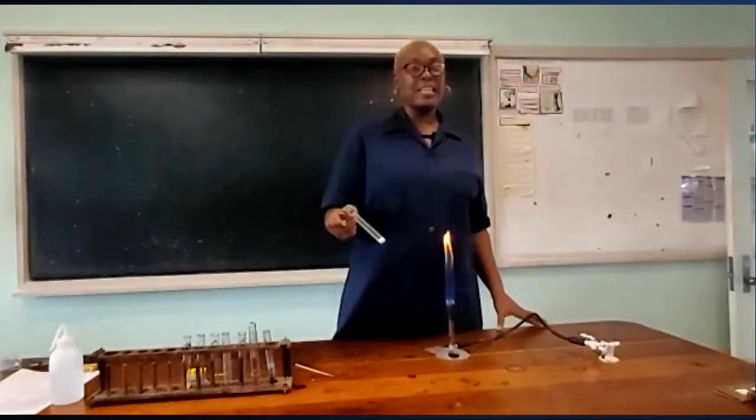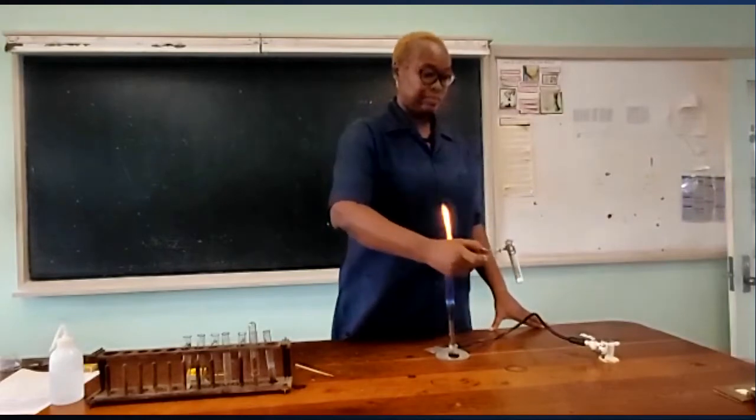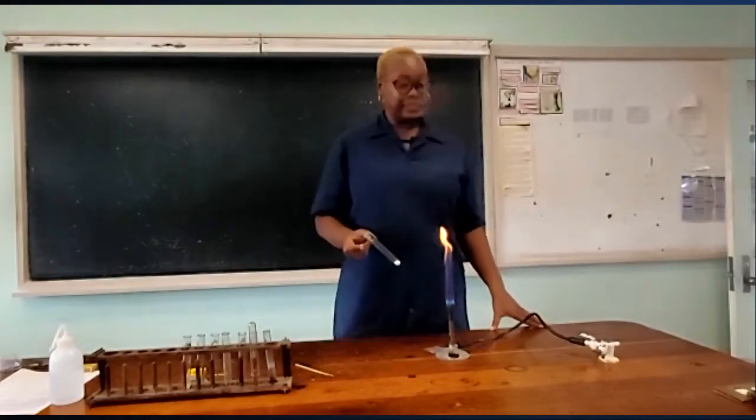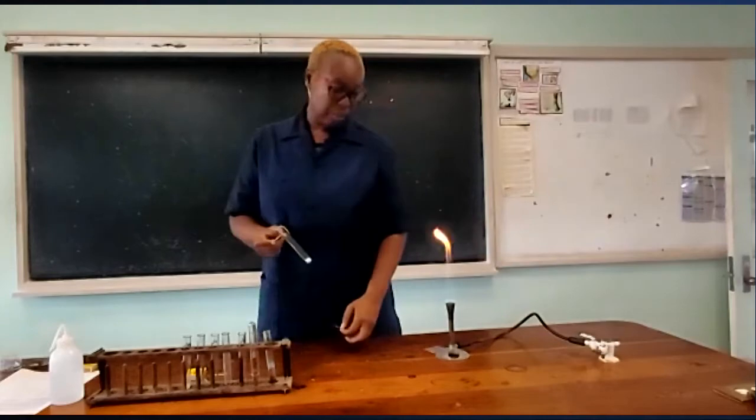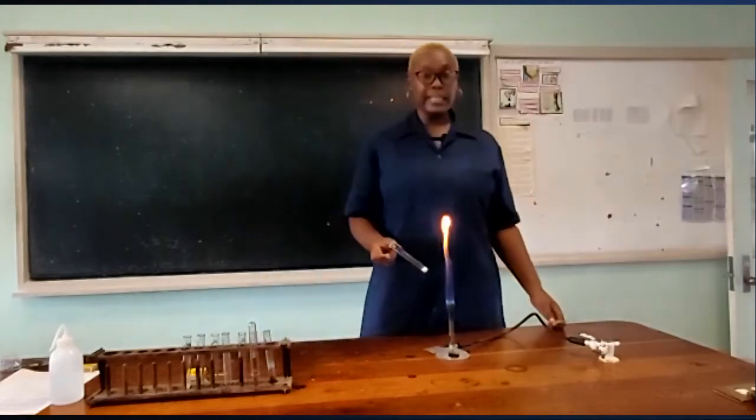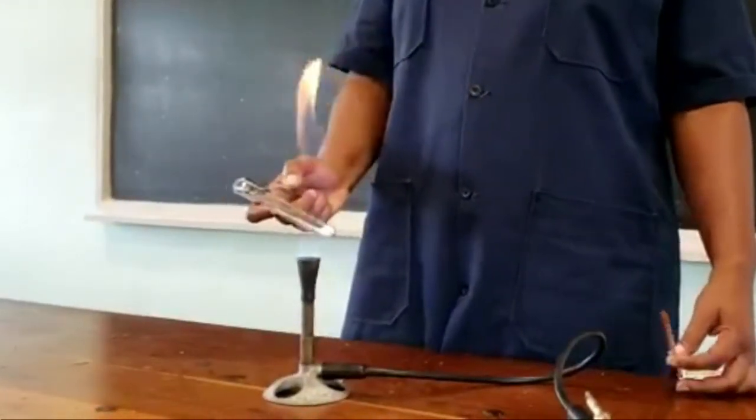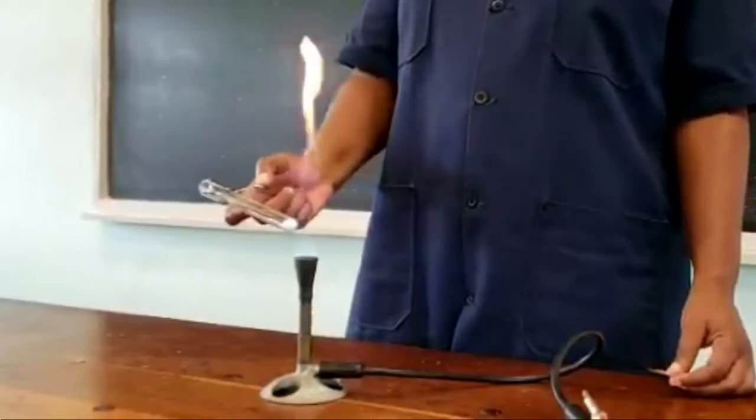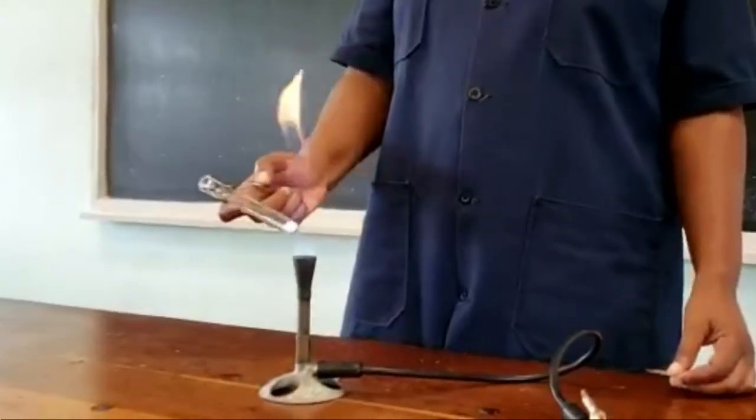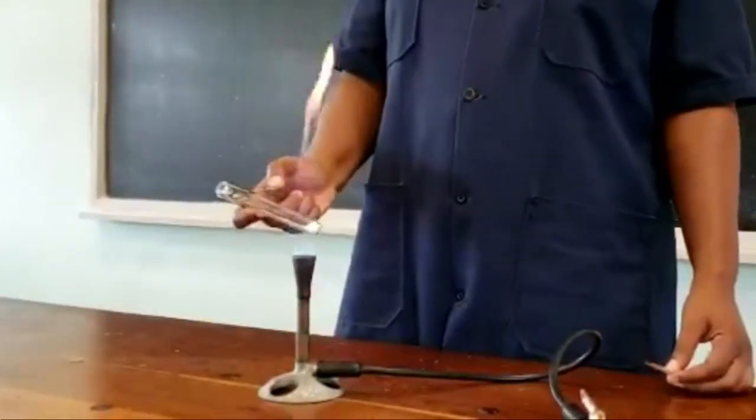So we have the white crystalline sodium nitrate and we're going to be heating it to determine or to investigate how stable it is to heat. We're heating it in the blue part of the flame. Remember the blue part of the flame is the hottest part of the flame.